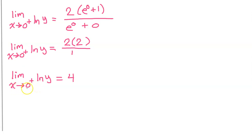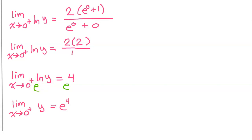Remember, we don't really want the limit of natural log y — we want to find what happens to y by itself. In the introduction I showed that we can exponentiate both sides of the limit equation. The base e and the natural log cancel each other out, leaving y by itself. So the limit as x approaches 0 from the right of y equals e to the 4th power. That is the final answer — e to the 4th power is just a constant.